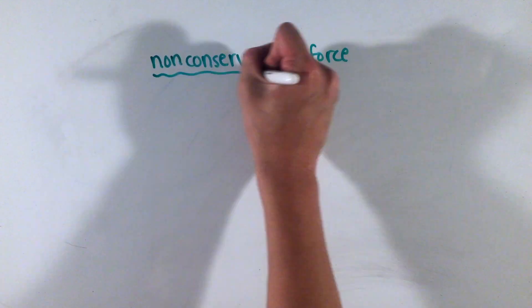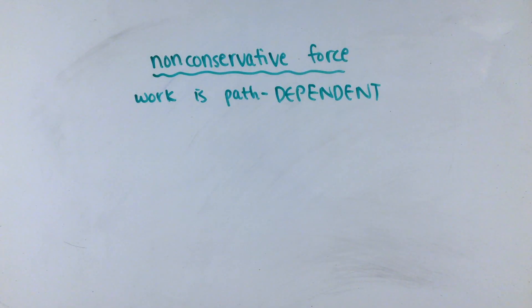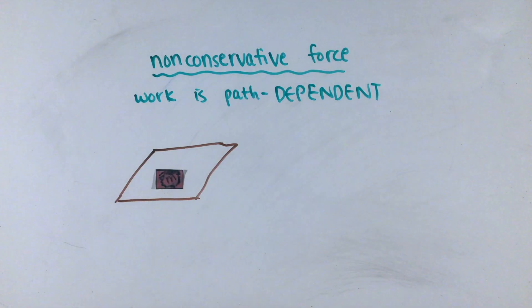In contrast, a non-conservative force, the most common being the force of friction, does different amounts of work depending on the path taken. Because the force of friction always opposes the motion of an object, its direction can actually change depending on the path taken.